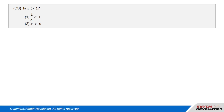Question: Is x greater than 1? Condition 1: 1 over x is smaller than 1. Condition 2: x is greater than 0.